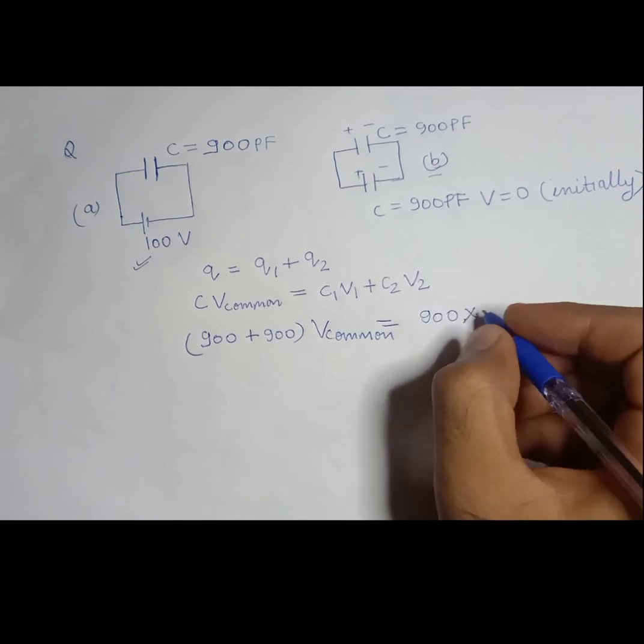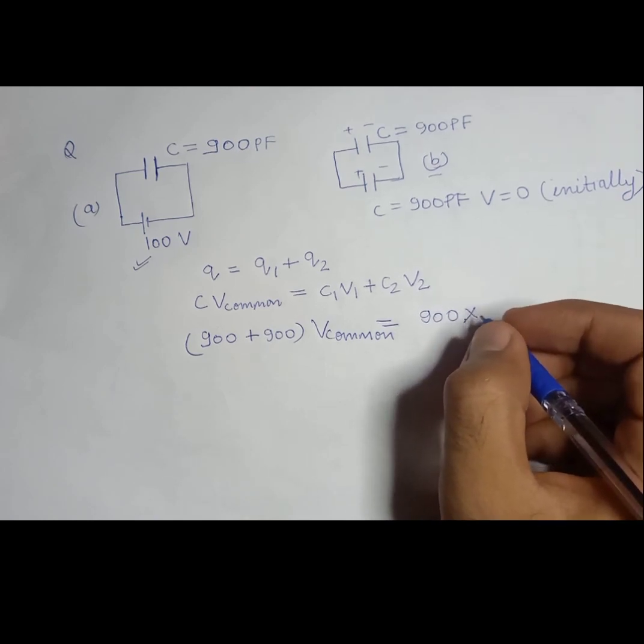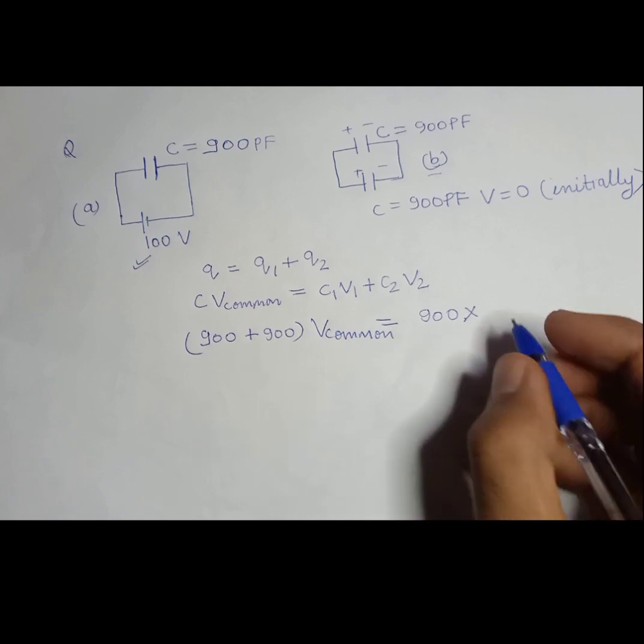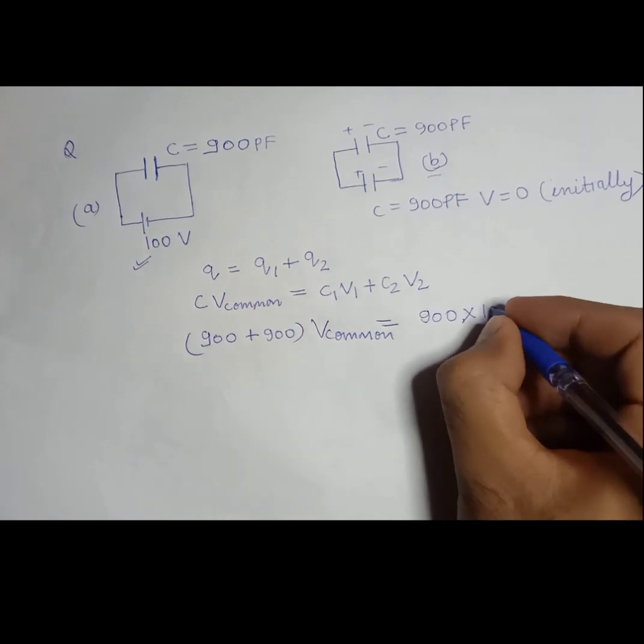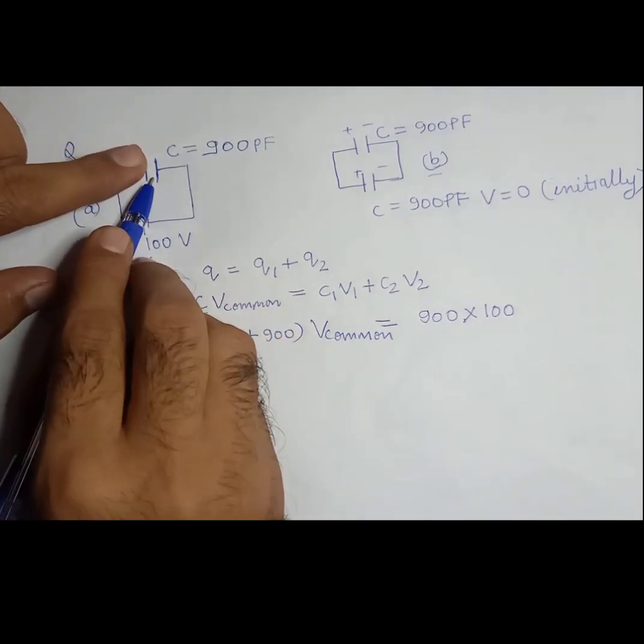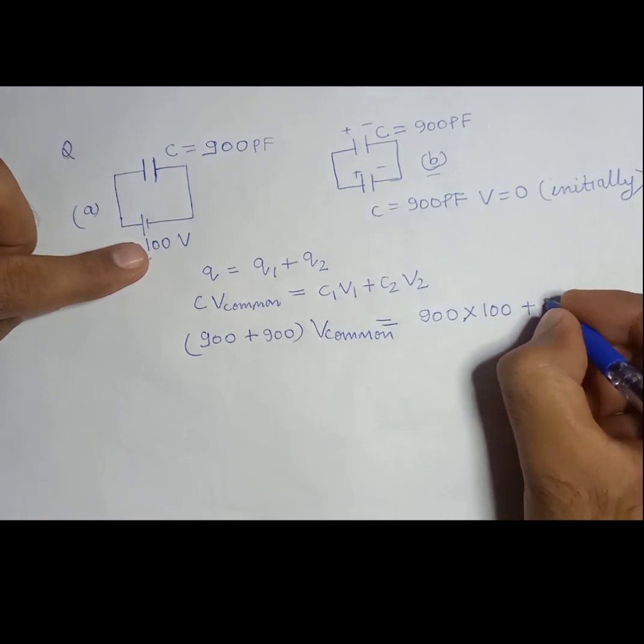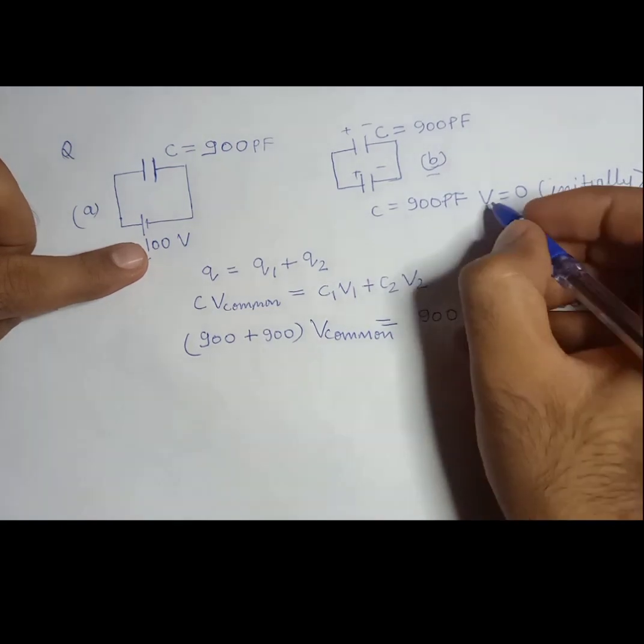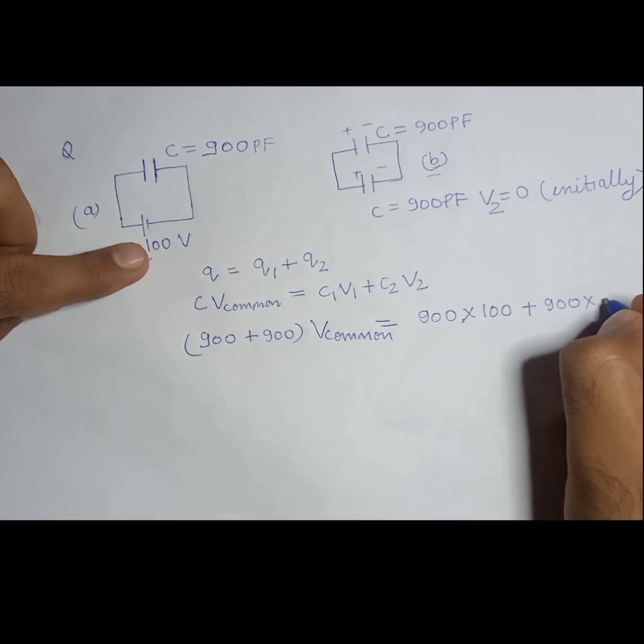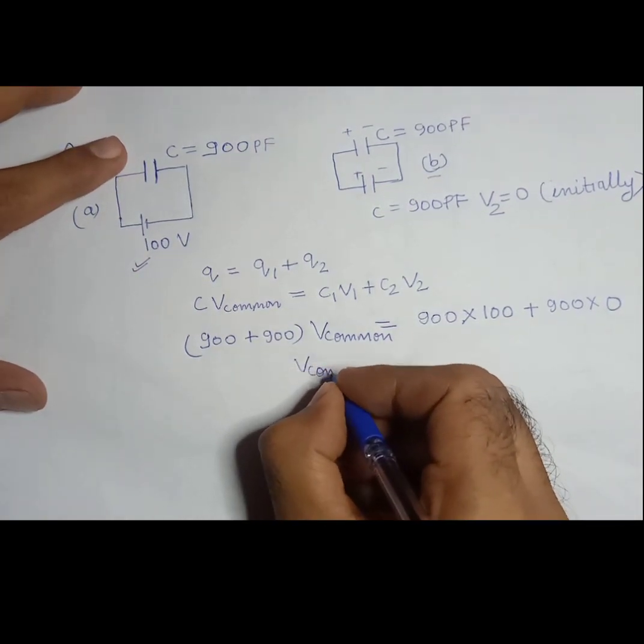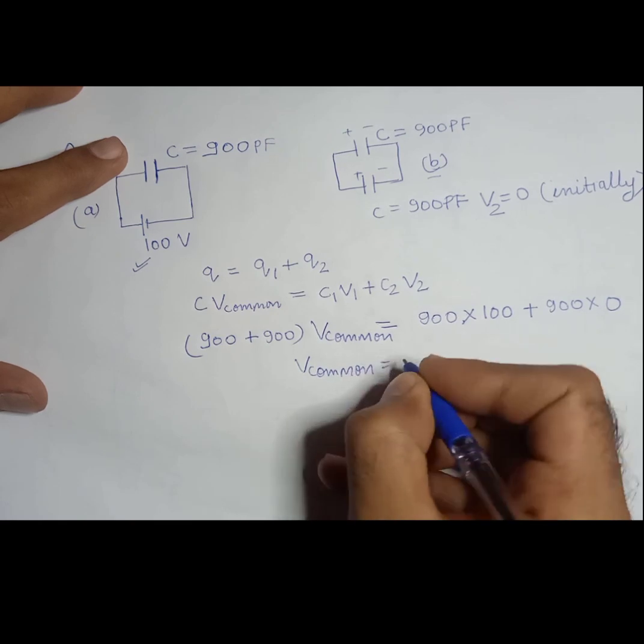All right, so 900 into V1, and C1 V1 is here. V1 initially was charged with the 100 volt battery, plus it is connected to C2 into V2. V2 is here, 0.